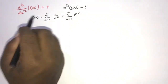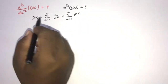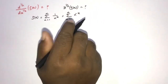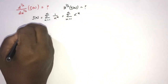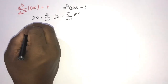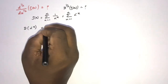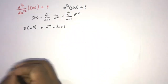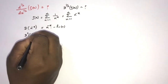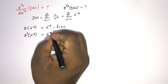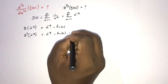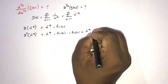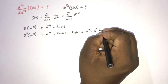Now, if we take a half derivative or fractional order derivative of the theta function, we need to differentiate n to the minus x. The first derivative of n to the minus x equals n to the minus x times minus natural log of n. The second order derivative of n to the minus x equals n to the minus x times (minus natural log of n) times (minus natural log of n), which equals n to the minus x times (minus 1) squared times natural log squared of n.